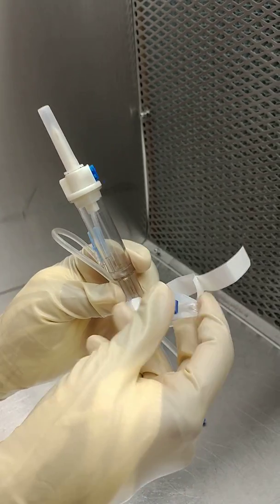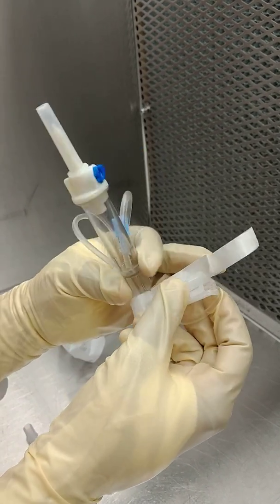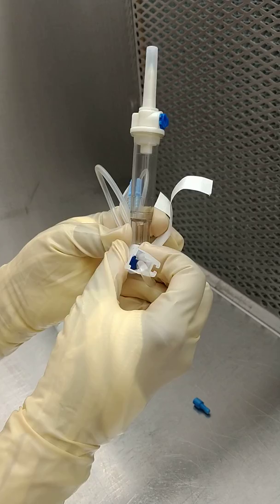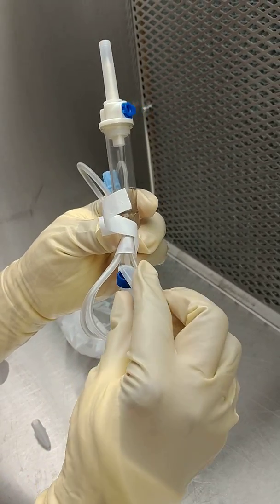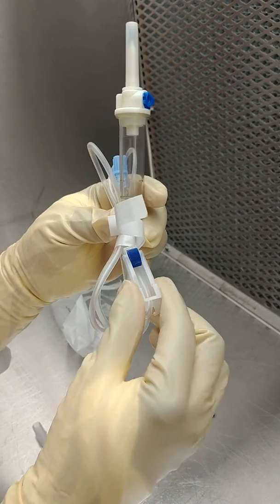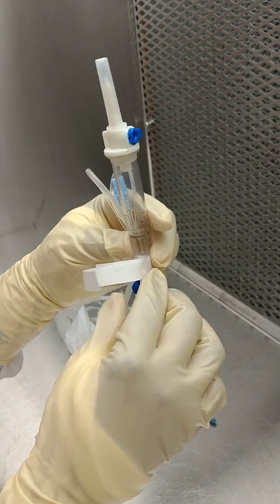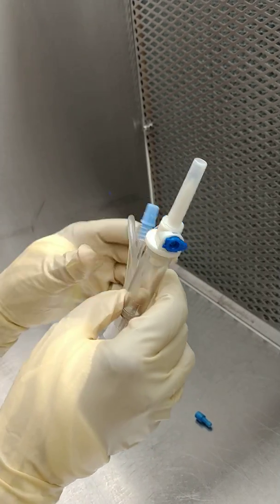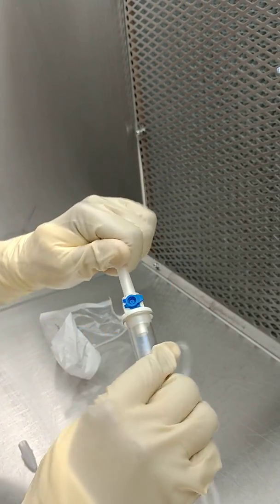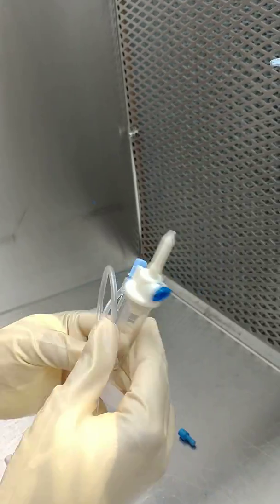After that, you want to make sure that you clamp your line off. This is a very, very important part, okay? Because we don't want to start off with the line not being clamped. Water will go everywhere. So now we're going to spike our infusion adapter.